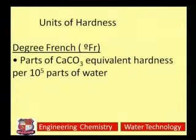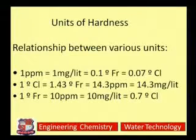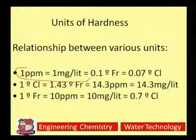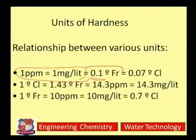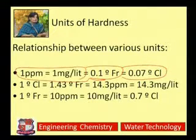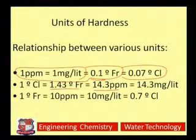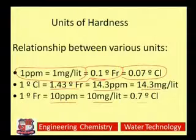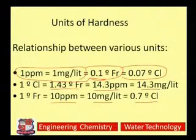Now let us see how to convert one unit into another. One ppm equals one mg/L, which equals 0.1 degree French, which equals 0.07 degree Clark. One degree Clark equals 1.43 degree French and 14.3 ppm (same for mg/L). In many operations we need to convert one unit of hardness into another, and such relationships are very important.